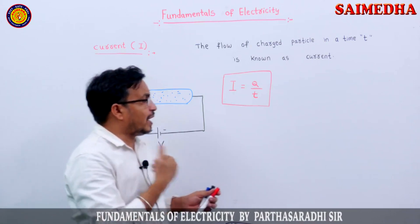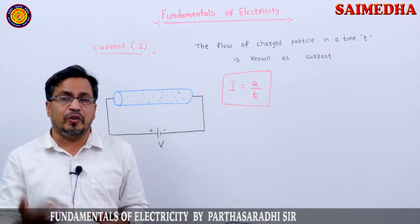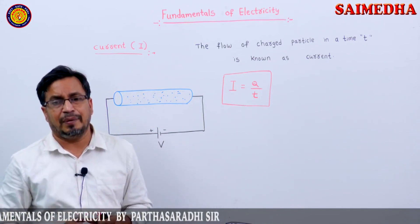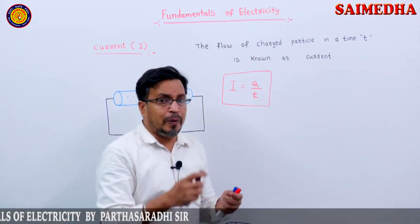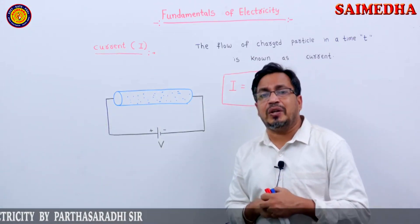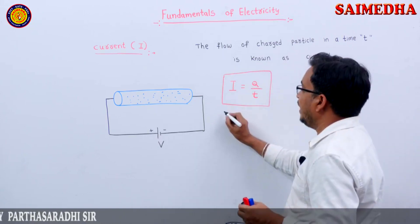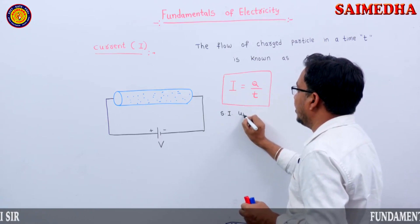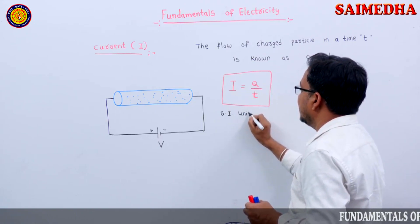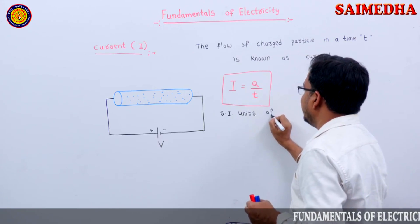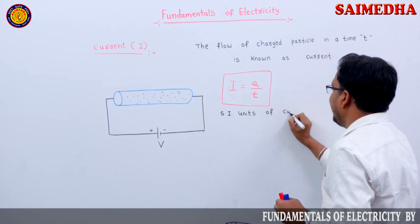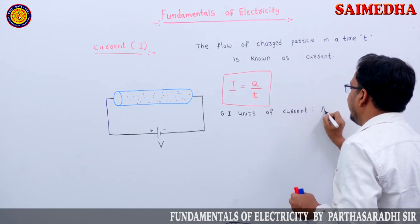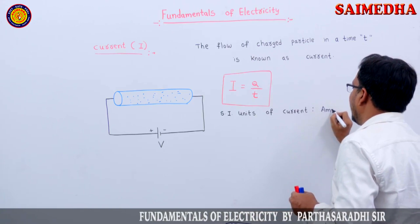What is Q in terms of current? Q equals I into T. Remember. Now, the SI units of current — what is the SI unit of current? Amperes.